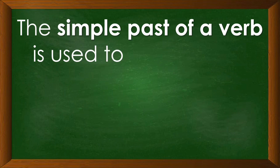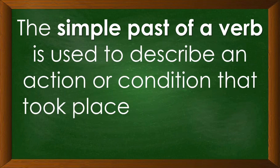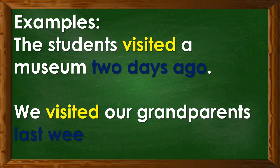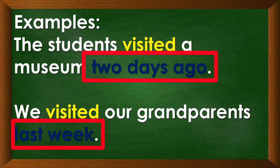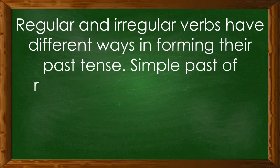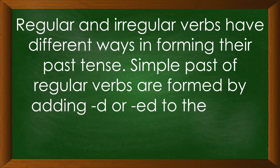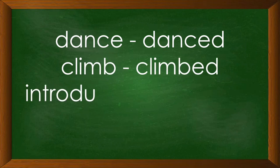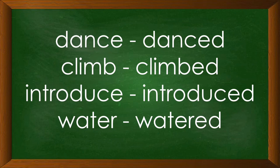The simple past of the verb is used to describe an action or condition that took place at a specific point in the past. Examples: The students visited a museum two days ago. We visited our grandparents last week. The verb visited is in the past form because the action took place two days ago and last week. The simple past of regular verbs is formed by adding D or ED to the base form of the verb. For example: dance/danced, climb/climbed, introduce/introduced, water/watered.